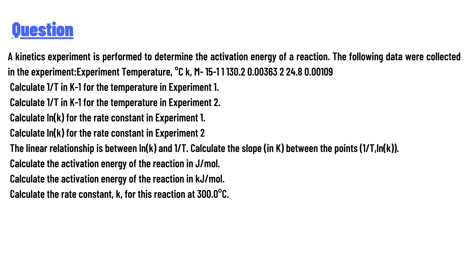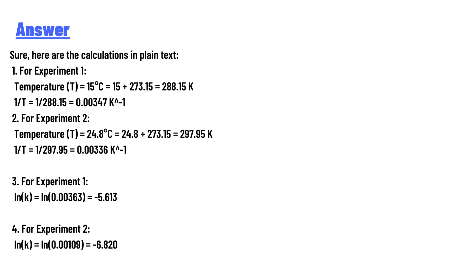For experiment 1: temperature T is 15°C. Converting: 15 + 273.15 = 288.15 K. Therefore, 1/T = 1/288.15 = 0.00347 K⁻¹.